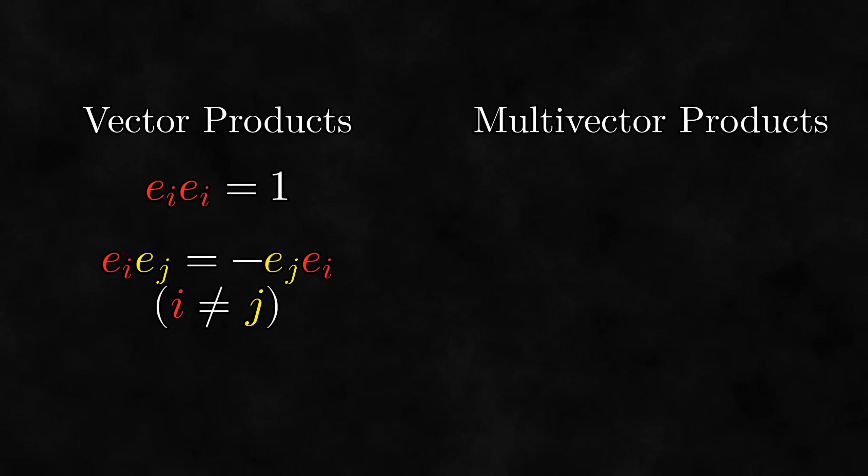We can calculate products on vectors using these equations on basis vectors. To calculate products on multivectors, we can use these equations on basis vectors. Wait, that's the same thing! It turns out that multiplying multivectors algebraically is practically the same thing as multiplying vectors algebraically.